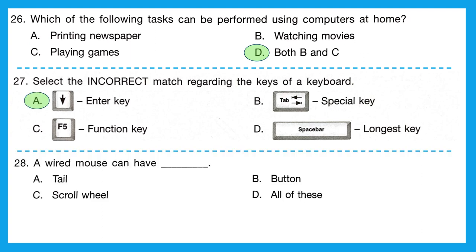Question 28: a wired mouse can have — A, tail; B, button; C, scroll wheel; or D, all of these. A wired mouse with a wire can have all three: tail, scroll wheel, and buttons. The correct option is D, all of these.